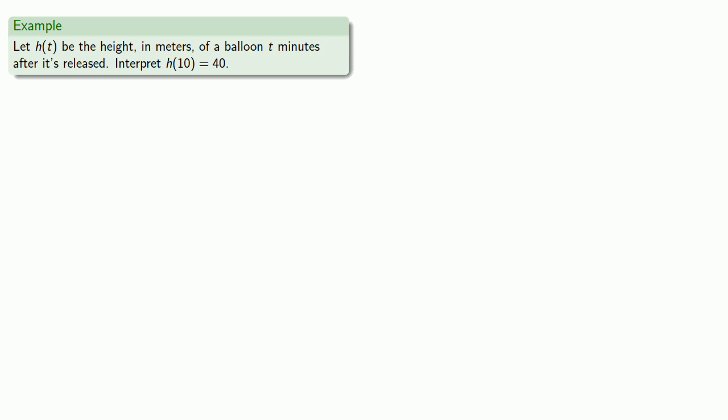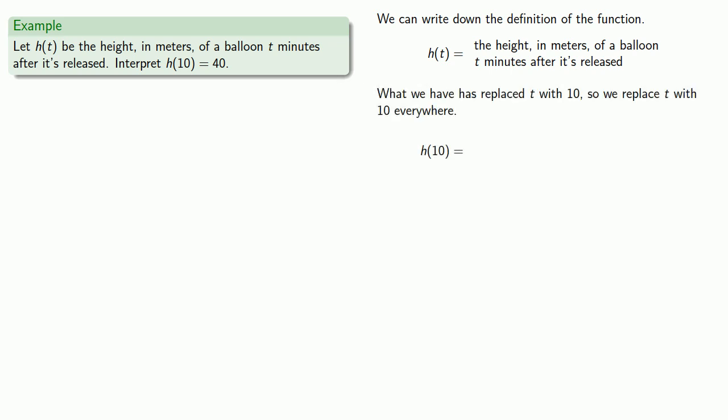So paper is cheap. We'll write down our definition of the function. And what we have is h(10). So we replace t with 10 everywhere. The variable t should be replaced with 10 everywhere we see it. And so we get the next statement: h(10) is the height in meters of a balloon 10 minutes after it's released.